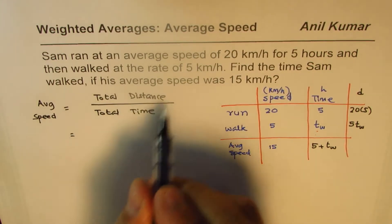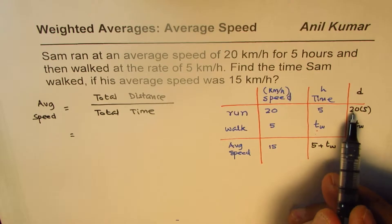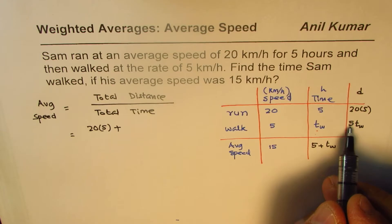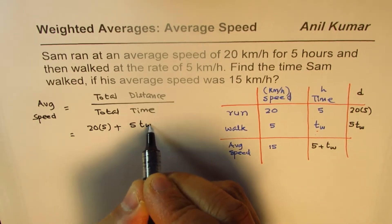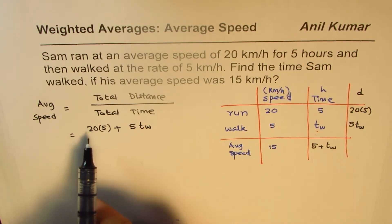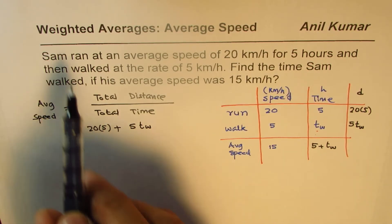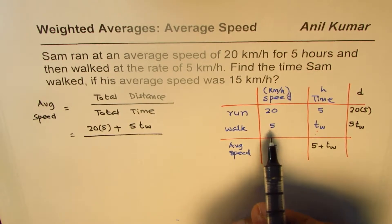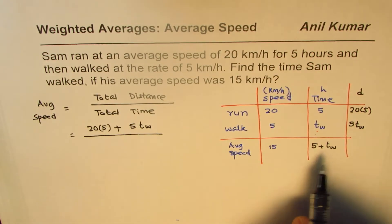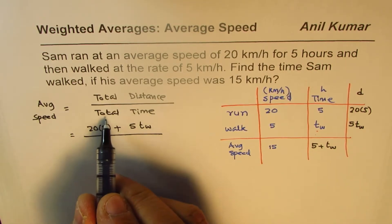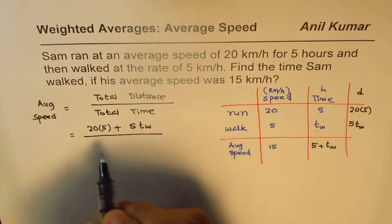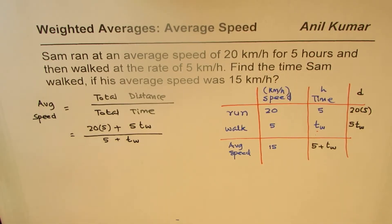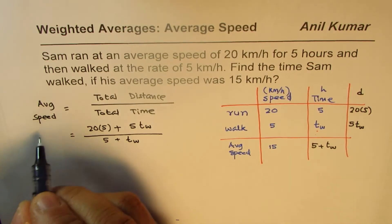We know what the total distance is: it is 20 times 5 plus 5 times T_walking. That is what happens in weighted averages — you multiply the quantity with the rate, add them up, and divide by the total, which in this case is total time: 5 plus T_walking. The average speed is given to us as 15, so we write 15 on the left-hand side.